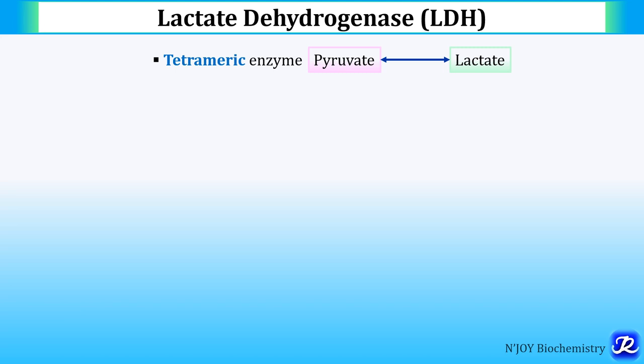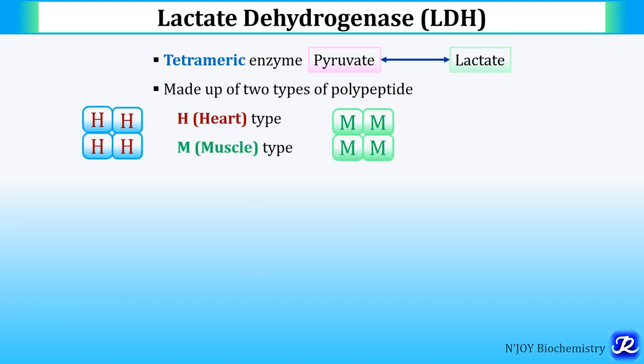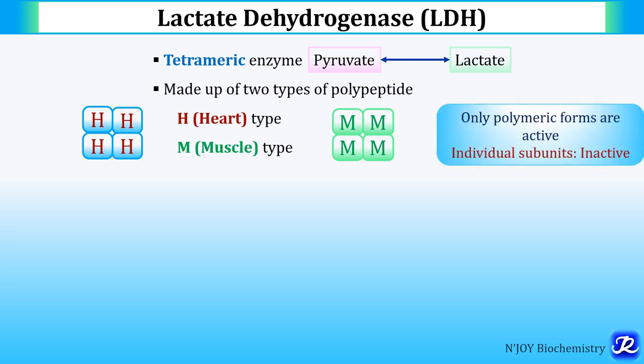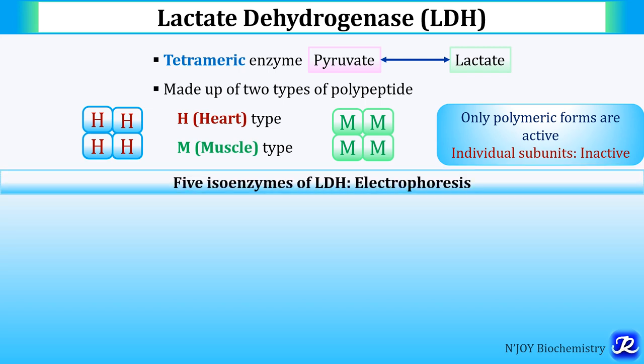Tetrameric means it has four subunits and is made up of two types of polypeptide: H (heart type) and M (muscle type). Only polymeric forms are active — individual subunits are inactive. There are five isoenzymes of LDH based on electrophoretic mobility.